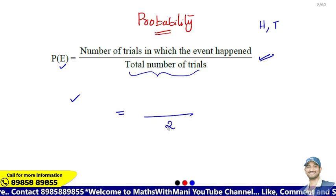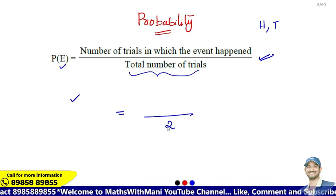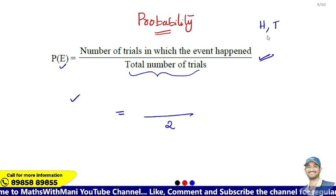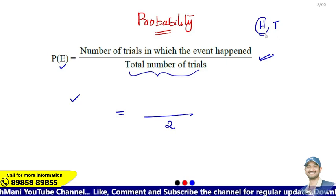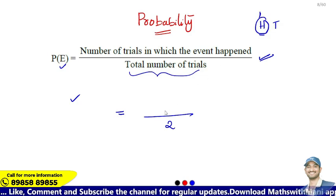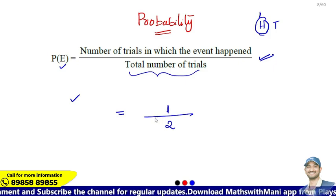There is one head and one tail. The question is: how many chances are there of getting a head? In any trial, head occurs in one outcome. So the number of trials in which the event happened is 1.